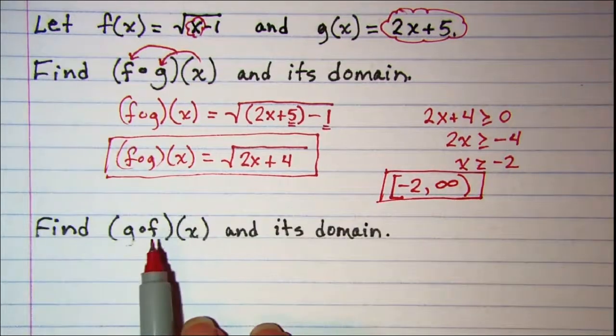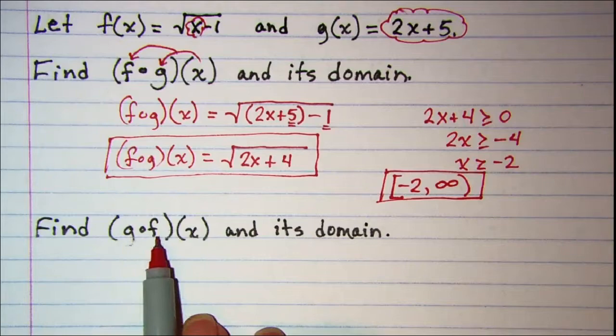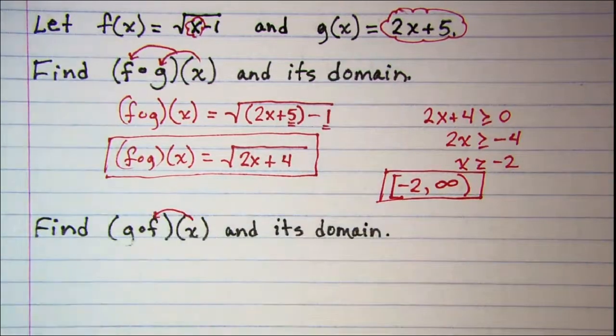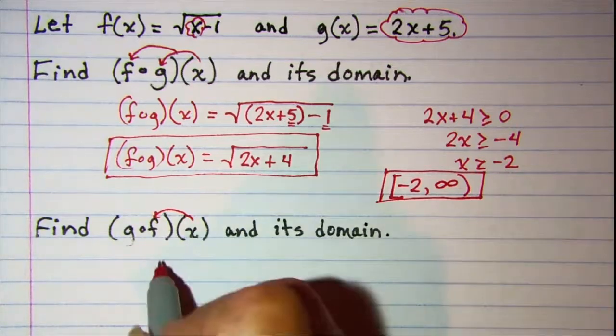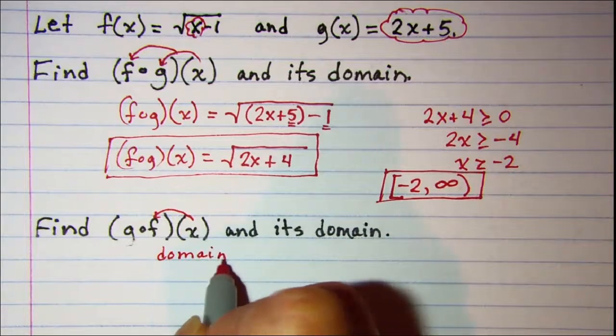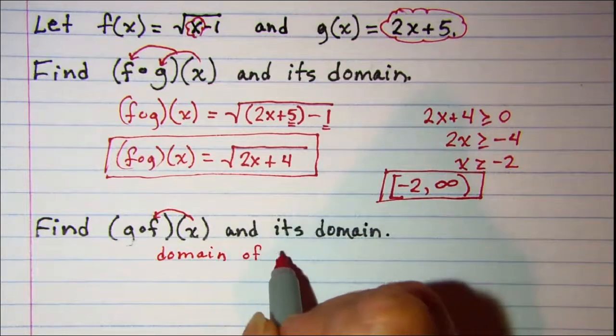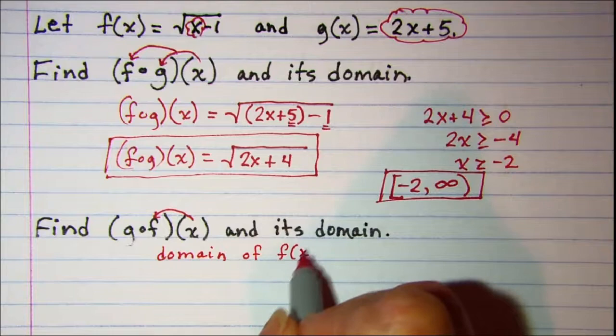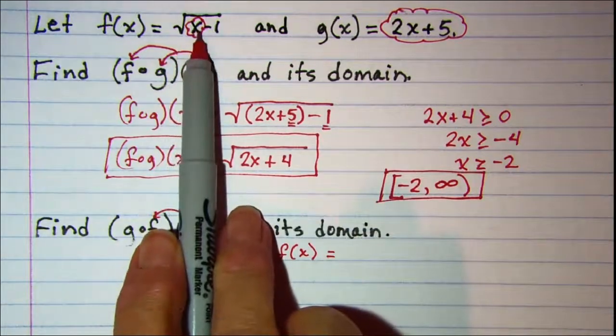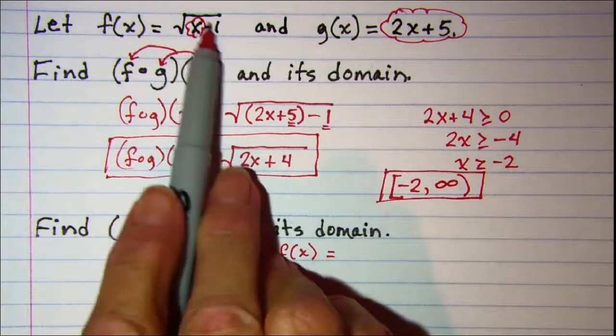Now let's find g composition f of x. So we'll first do f(x) and the domain of f(x) is we want the radicand of f(x) to be greater than or equal to 0.